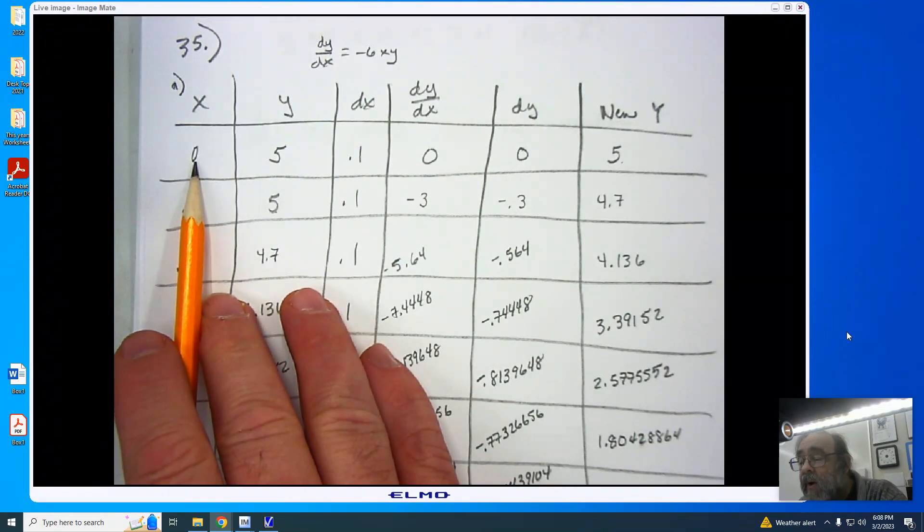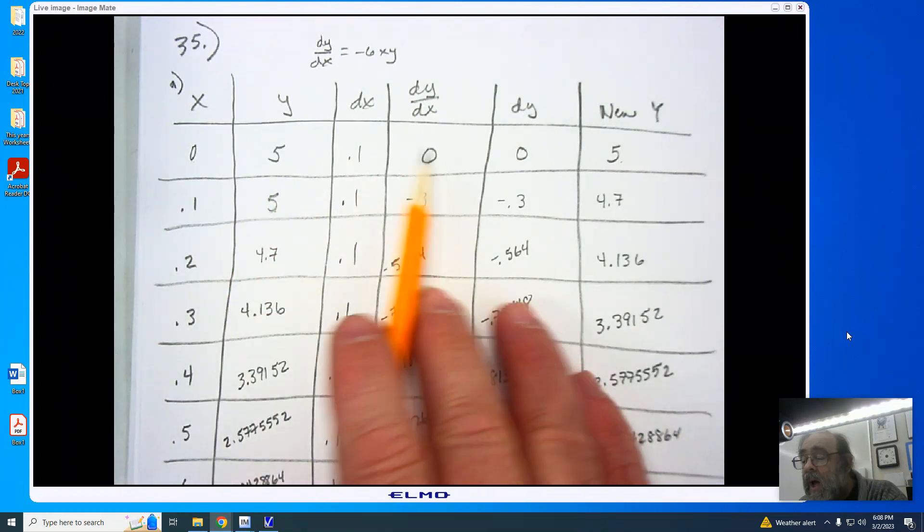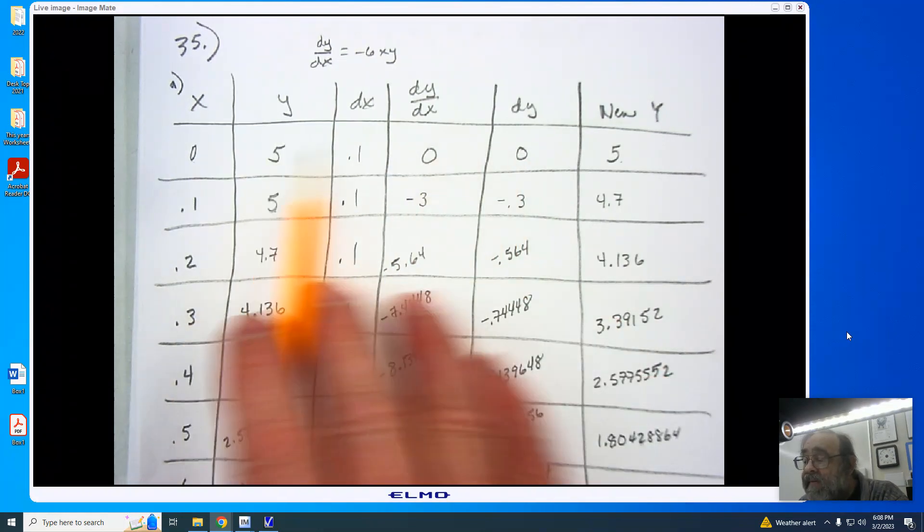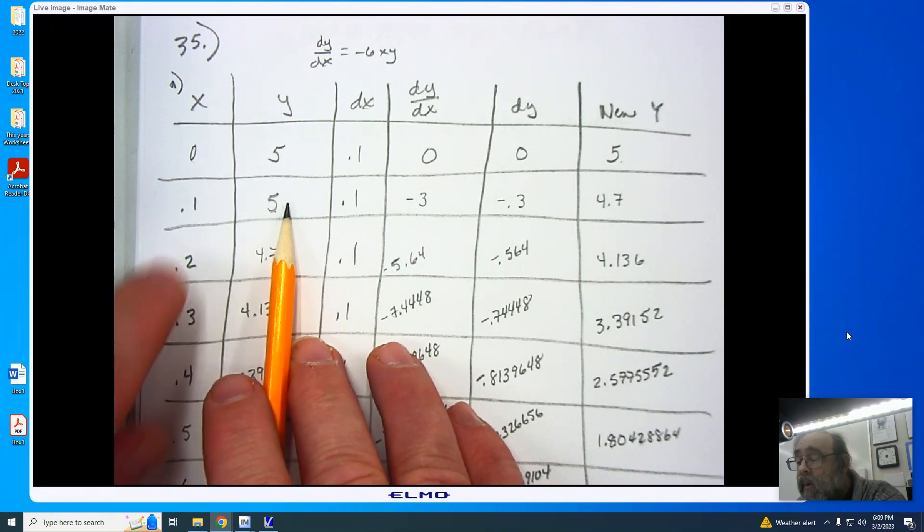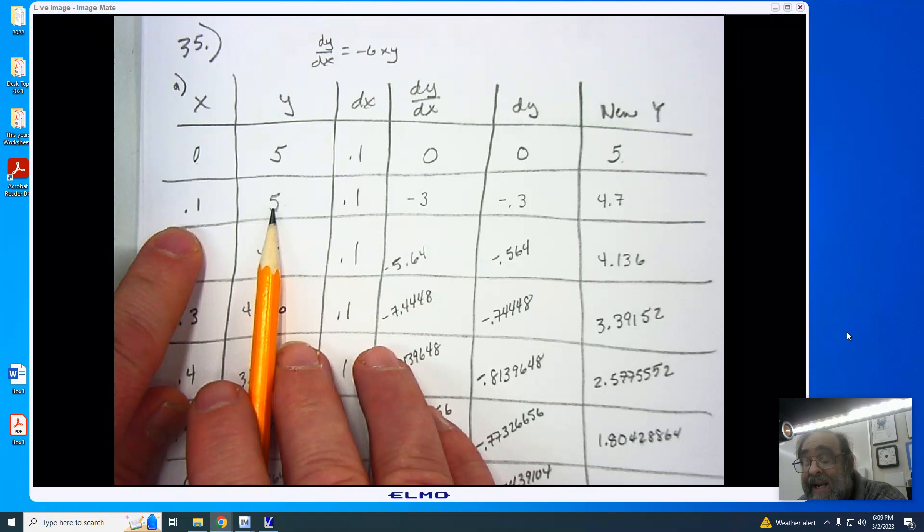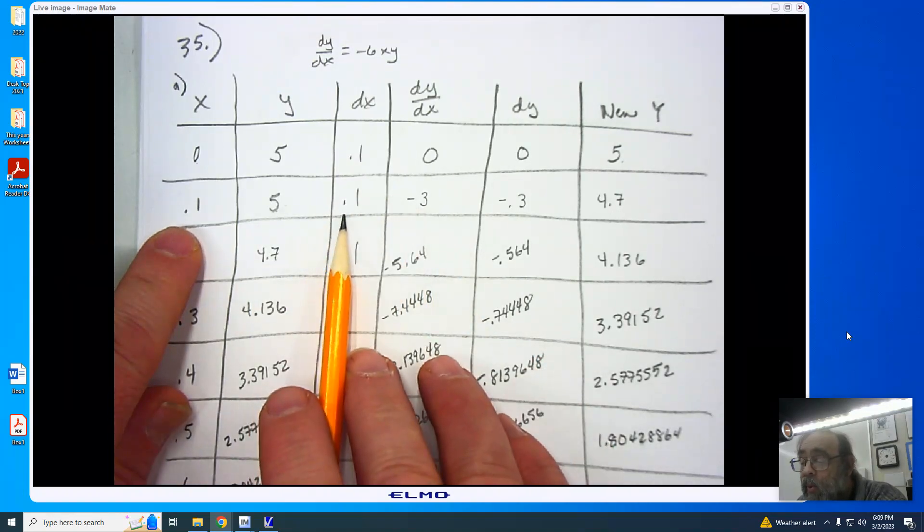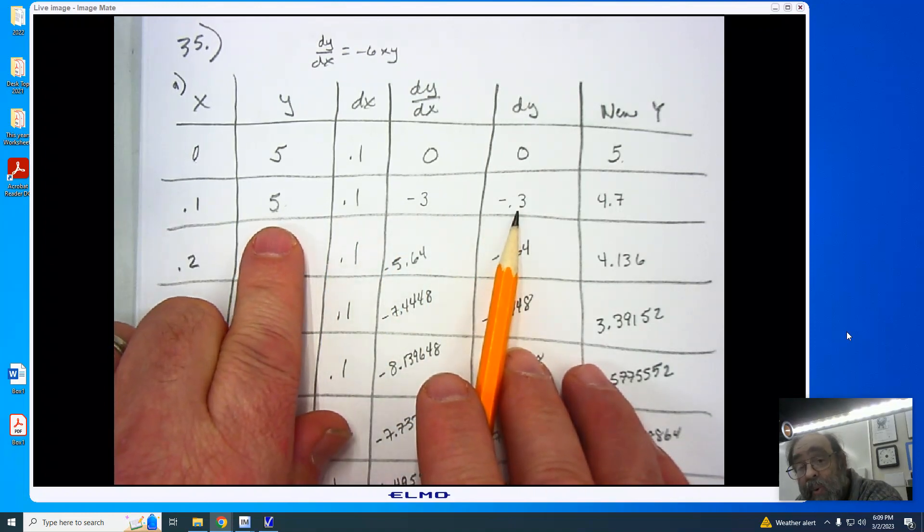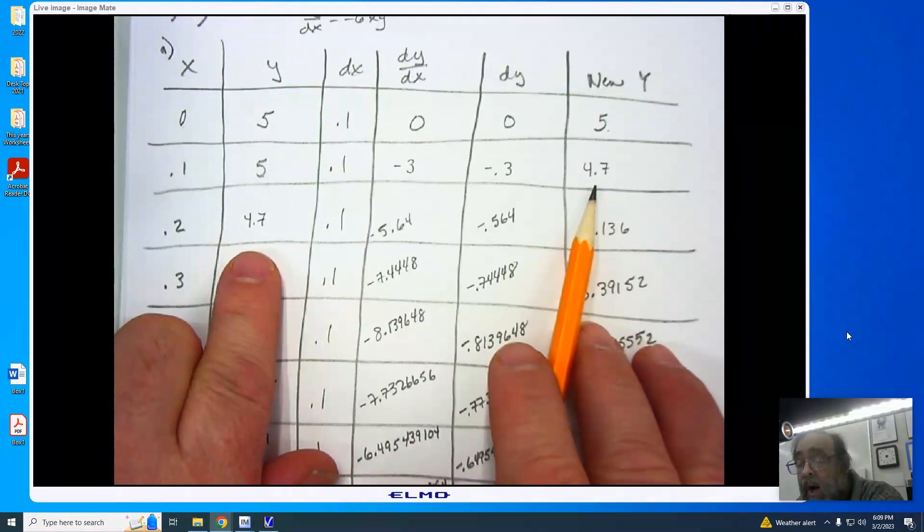So you'll notice I started with my 0. Zero times 5 times negative 6 was 0. I multiplied by 0.1 and got 0. When I add the 0 to the 5, I end up getting 5 which begins the new position. We now take 0.1 and we multiply by 5 and negative 6, and it gives us negative 3. We multiply by 0.1 to get negative 0.3, and we add that negative 0.3 to the 5 to get 4.7, which now goes into our y.